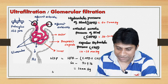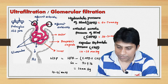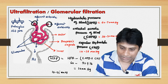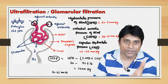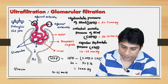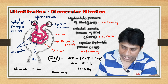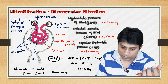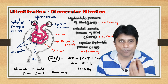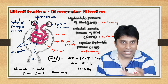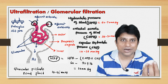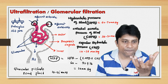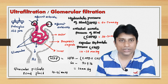The net filtration pressure is estimated to be around 10 to 25 millimeters of mercury. With this net filtration pressure, the plasma of the blood is filtered into the lumen of the Bowman's capsule — this filtered fluid is called the glomerular filtrate, also known as renal fluid. This is what occurs inside the Bowman's capsule. The Bowman's capsule along with the glomerulus is called the renal corpuscle or Malpighian body.